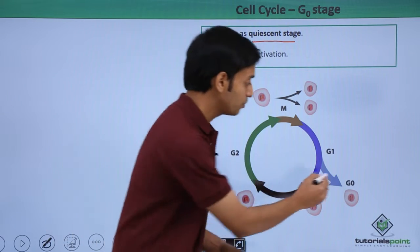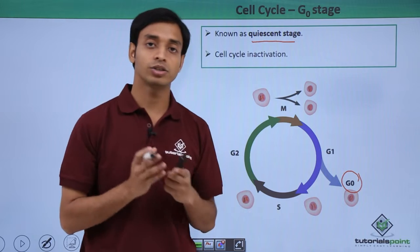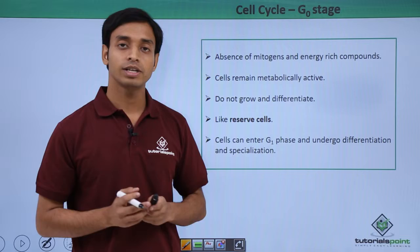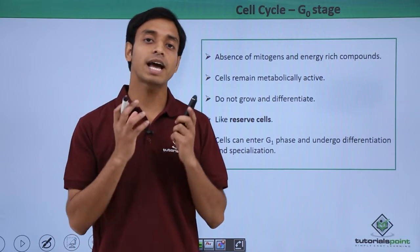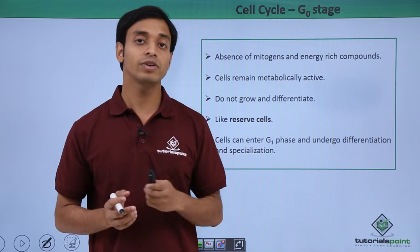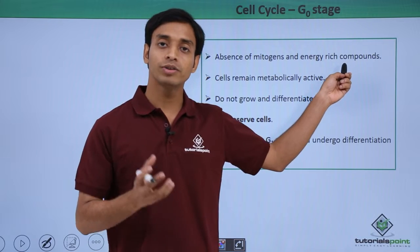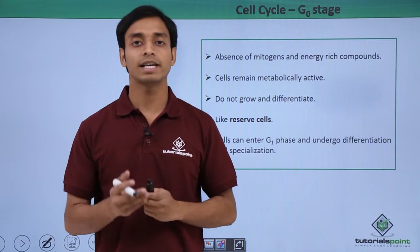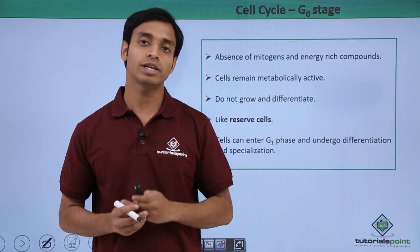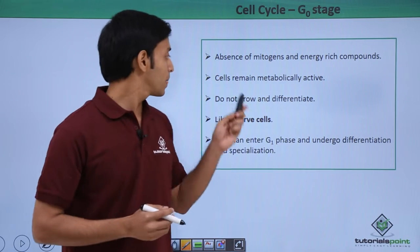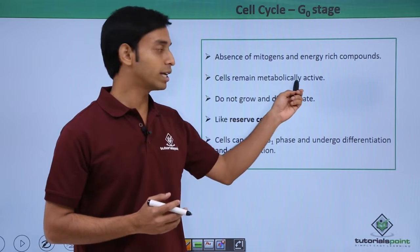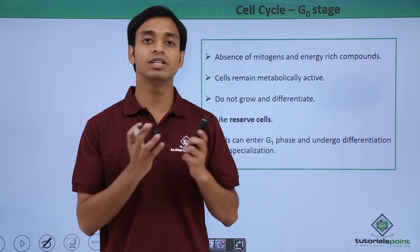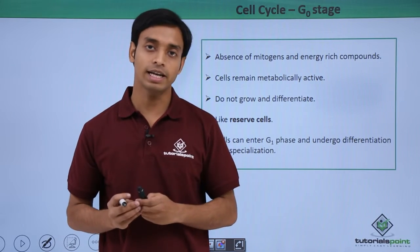This happens if there is absence of mitogens as well as energy-rich compounds. If there are no ATP molecules available for cell division, then a cell may enter the G0 phase. The cell remains metabolically active—it does not die, and once needed, it can again start cell division.